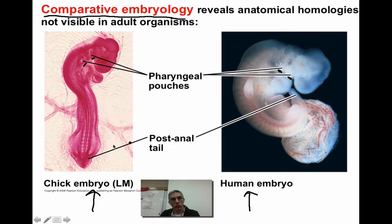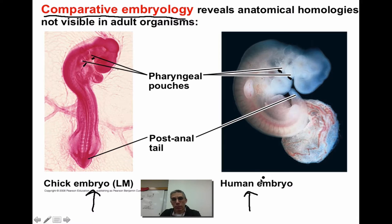We also have something called a post-anal tail. A chicken does have a tail, retained in the adult and visible in the embryo. In the human embryo, even early on we do have a post-anal tail, but it is absorbed by the embryo during development. Humans typically don't have tails, but because it was present early in development, we consider that a piece of evidence that a human and a chicken are related at some point in that phylogenetic tree.